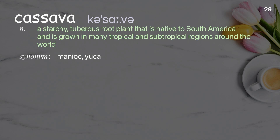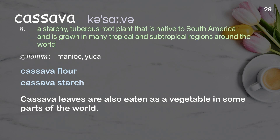Cassava. A starchy, tuberous root plant that is native to South America and is grown in many tropical and subtropical regions around the world. Examples: cassava flour; cassava starch. Cassava leaves are also eaten as a vegetable in some parts of the world.